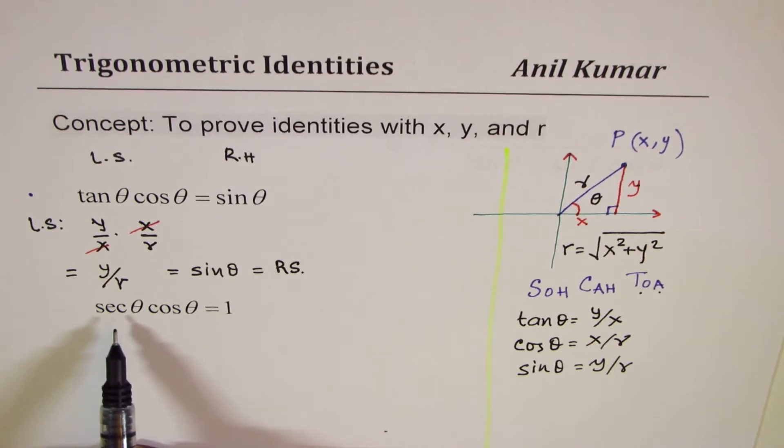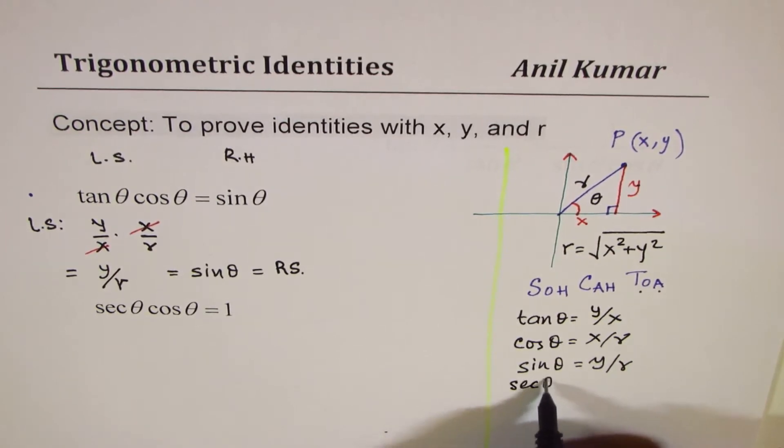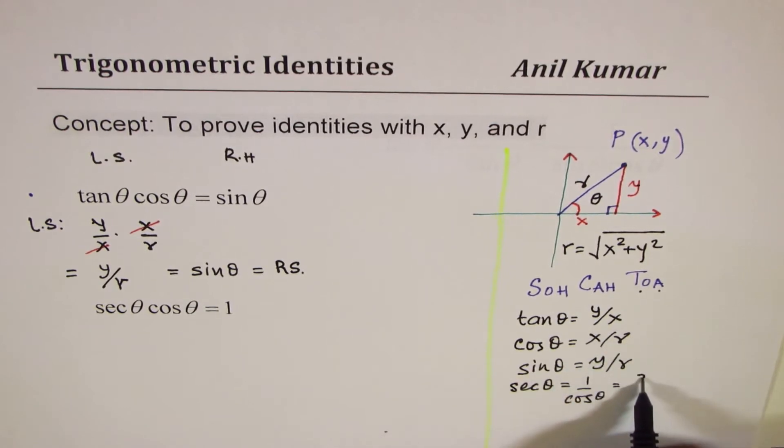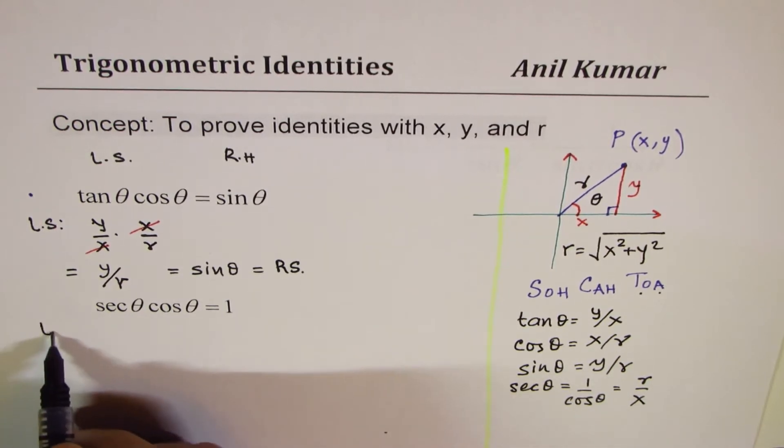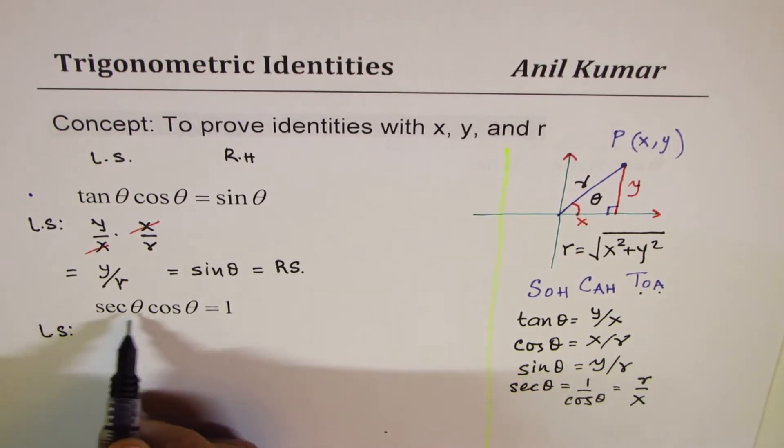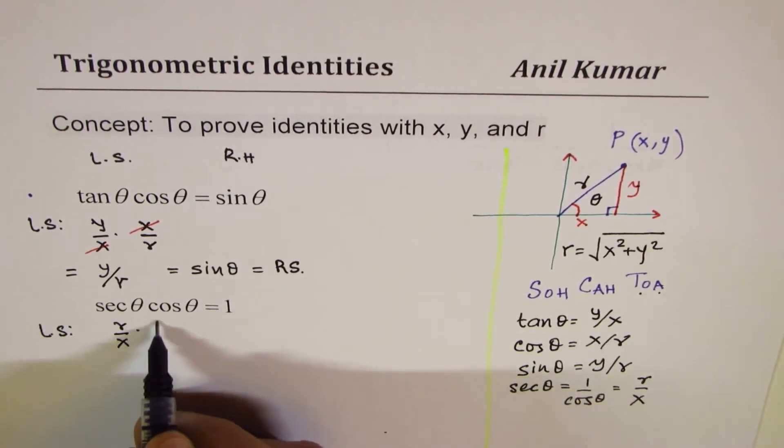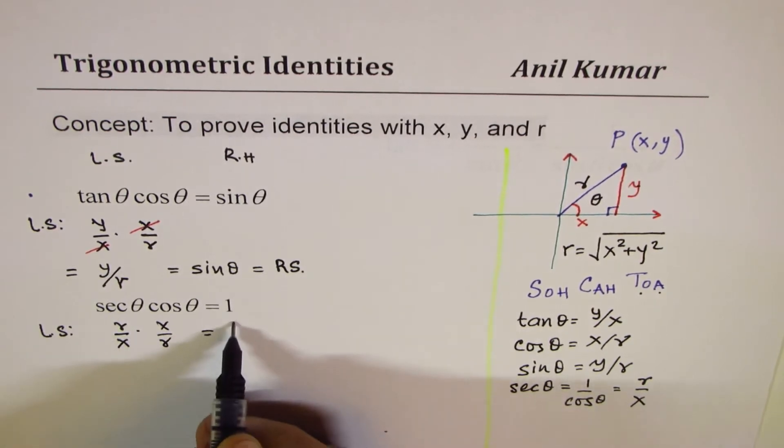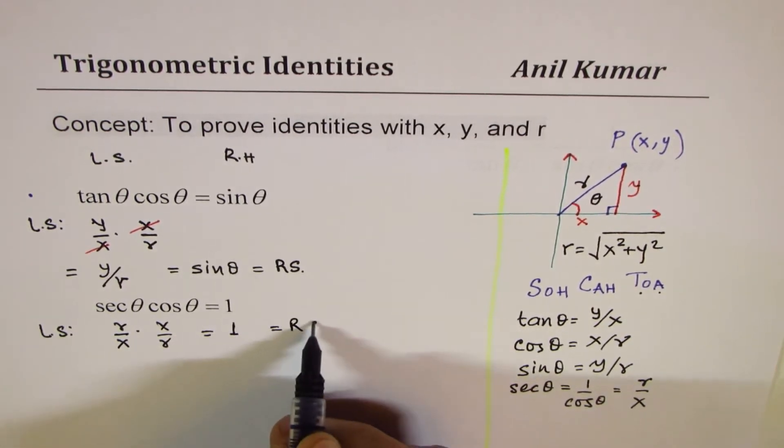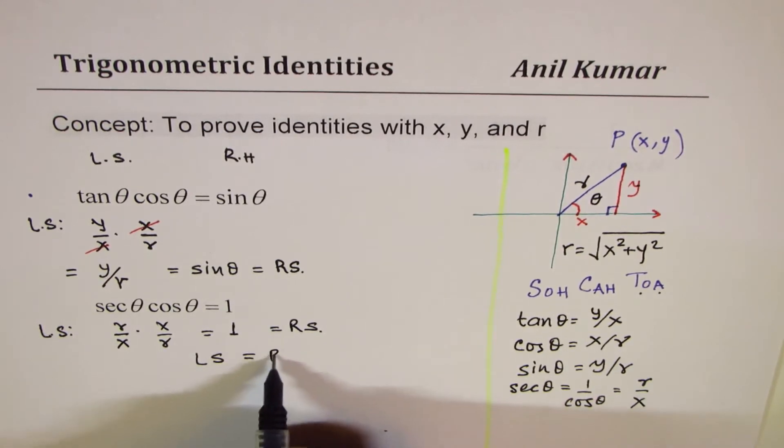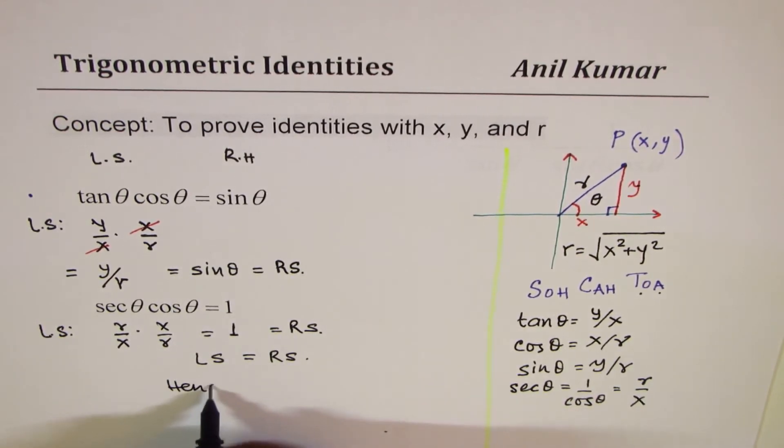Now, secant theta is reciprocal of cos theta. So, secant theta is equals to 1 over cos theta. If you flip this, you get r over x. So, we replace secant theta. Again, we will start with the left side. We will replace secant theta with r over x. Cos theta is x over r. And both cancel gives us 1, the right side. So, again, we have shown that left side equals right side, hence proved.